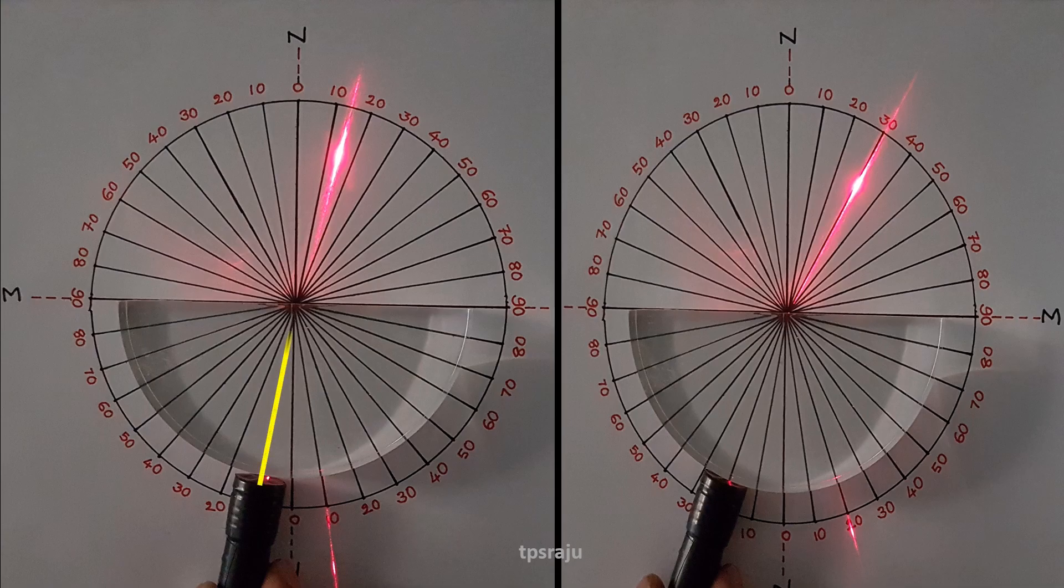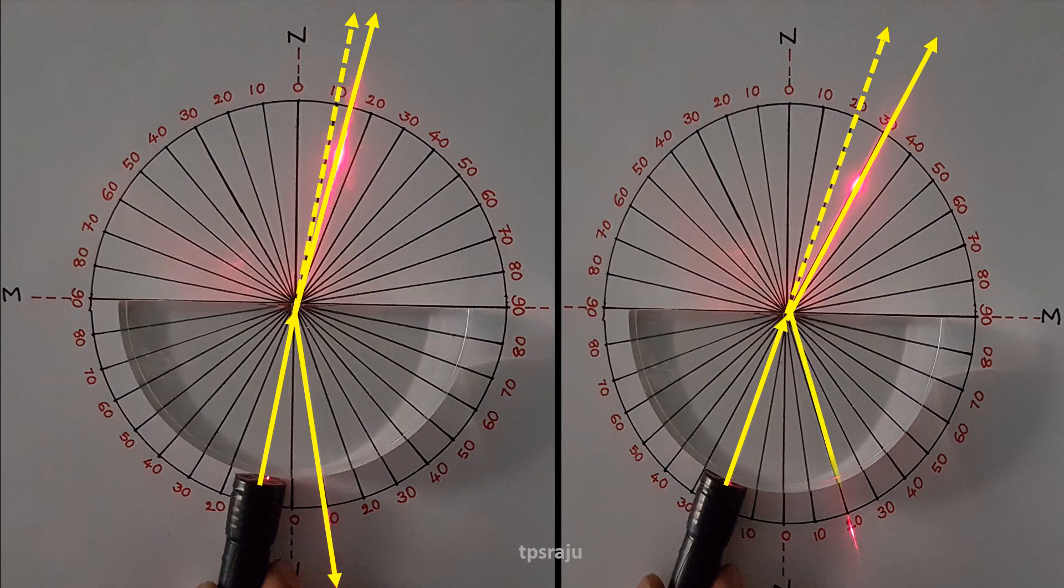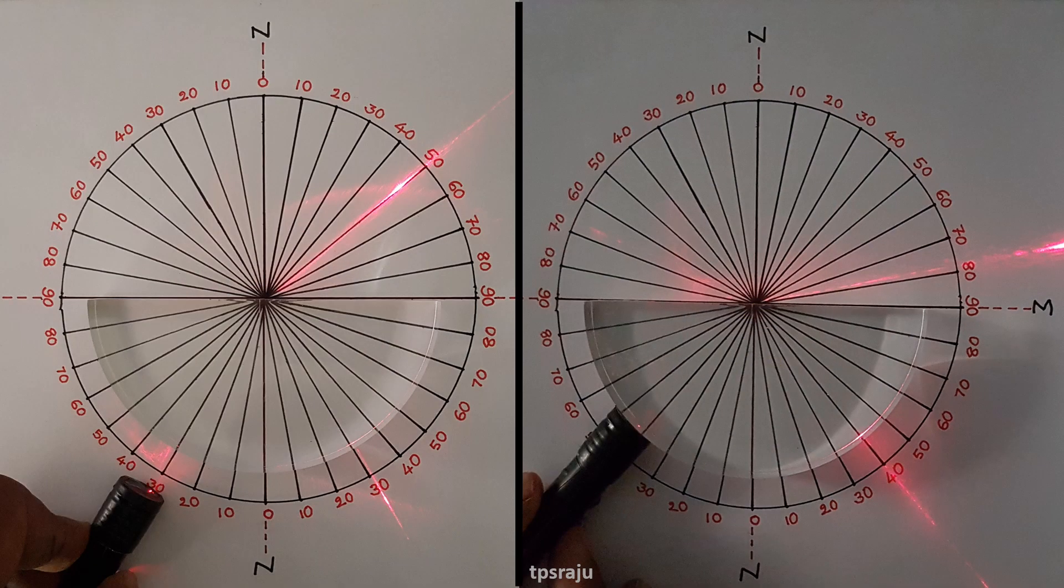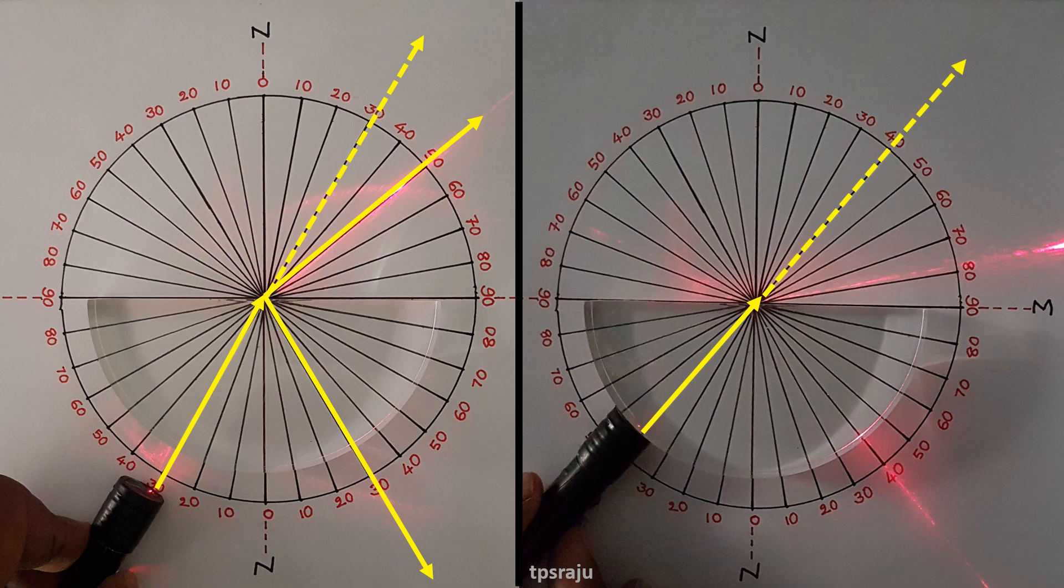When light passes through 10 degrees it refracts at 15 degrees, and some part of light reflects at 10 degrees. When light passes through 20 degrees it refracts at 30 degrees, and some part of light reflects at 20 degrees. When light passes through 40 degrees it refracts at 80 degrees, and some part of light reflects at 40 degrees.